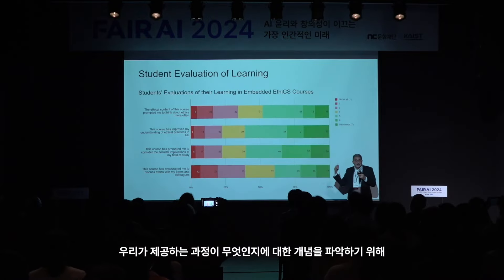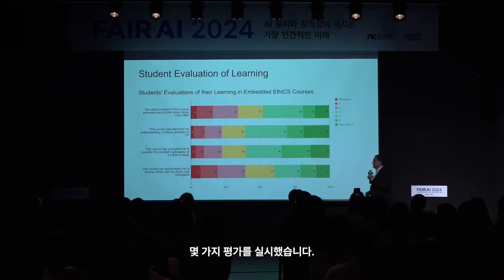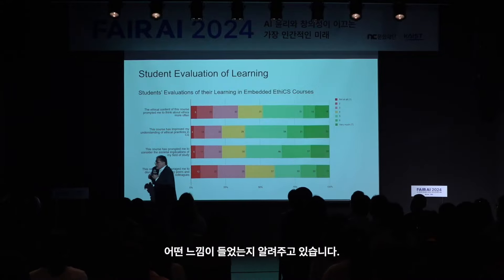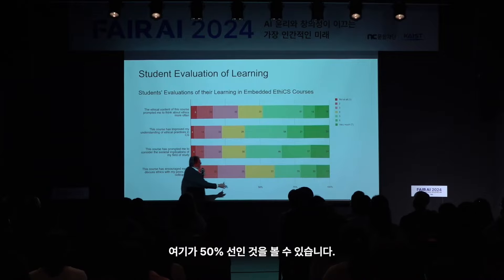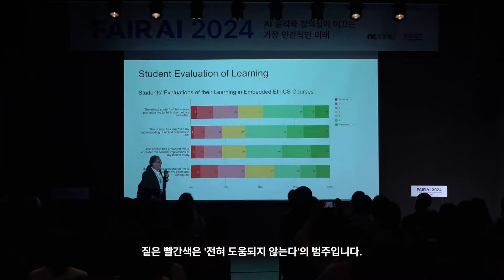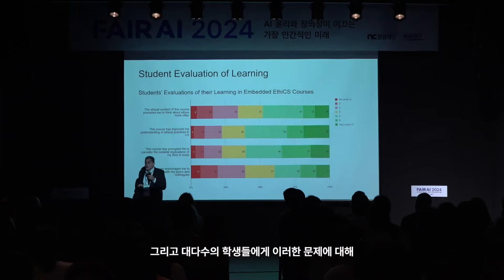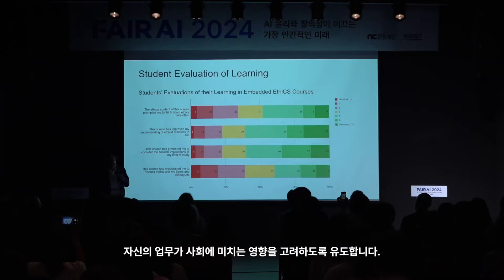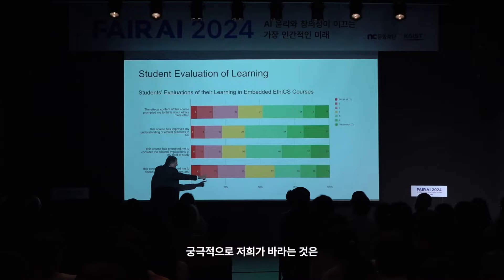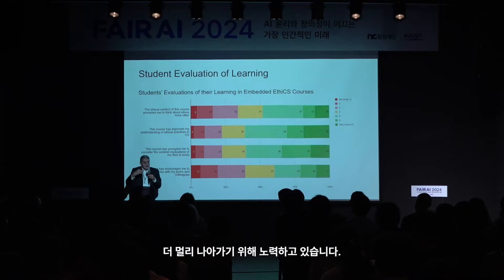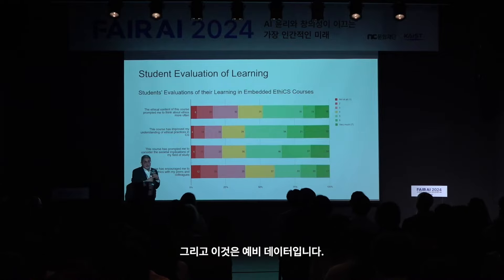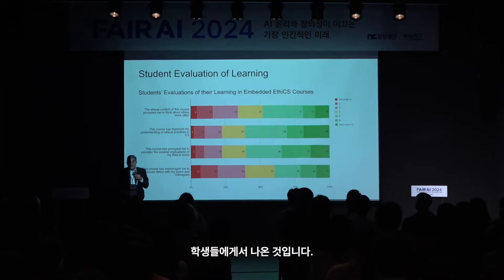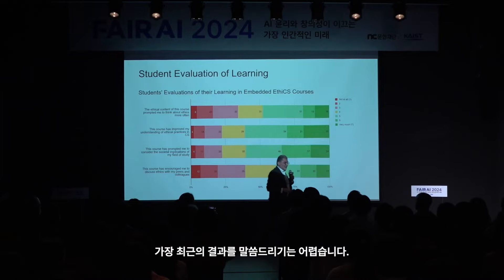We've done some evaluations to understand how students view the courses. This is preliminary data, but when asked whether the ethical content prompted them to think about ethics more often, the vast majority of students reported it prompts them to think more about these issues, improve their understanding of ethical practice, and consider societal implications of their work. There's still more work to do—we'd like the whole bar to be deep green. This data comes from students who often only had one or two embedded ethics modules, not the full set we deliver today. We have an ongoing study but haven't collected all the data yet.